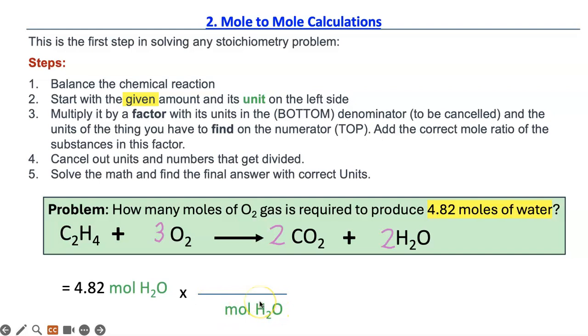Now, on the top is the numerator. It's the thing you have to find which is moles of O₂. Now, you put the mole ratios for each of those from the balanced equation. For O₂, it will be 3.